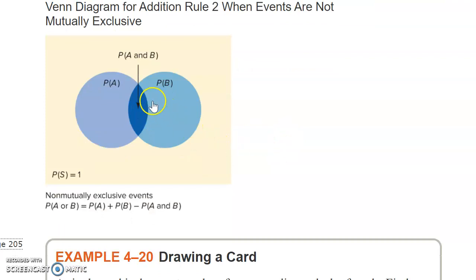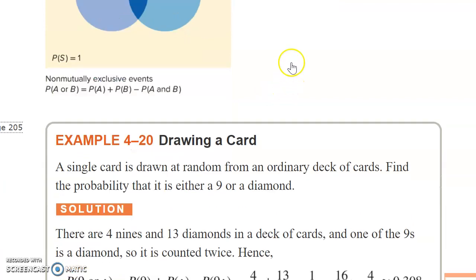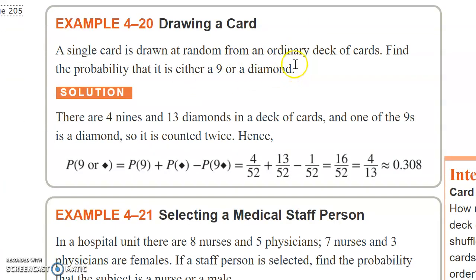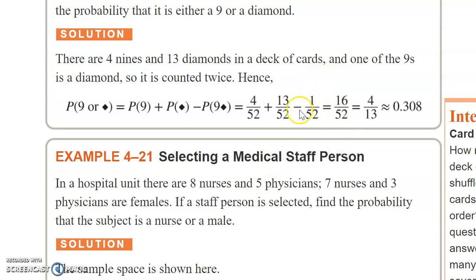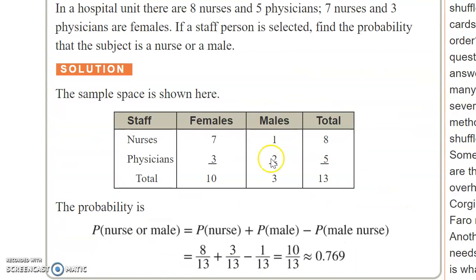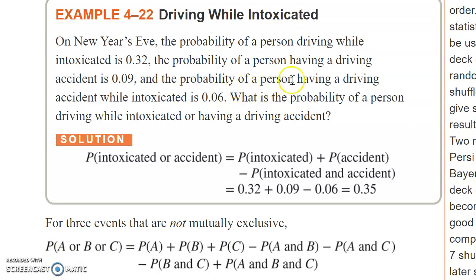If you just added probability of A plus probability of B, you'd be counting the overlapping people twice. So you take away one instance of the intersection — the A and B overlap — to avoid double counting. Here's an example: a single card is drawn that is either a nine or a diamond. The probability is the probability of a nine plus the probability of a diamond, minus the probability of the nine of diamonds, because the nine of diamonds would be counted in both groups and you don't want to count it twice.